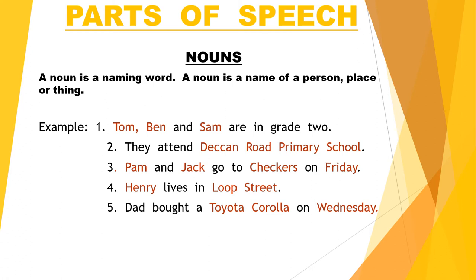Sentence 5: Dad bought a Toyota Corolla on Wednesday. Toyota Corolla is the make of a car and Wednesday is the day of the week.